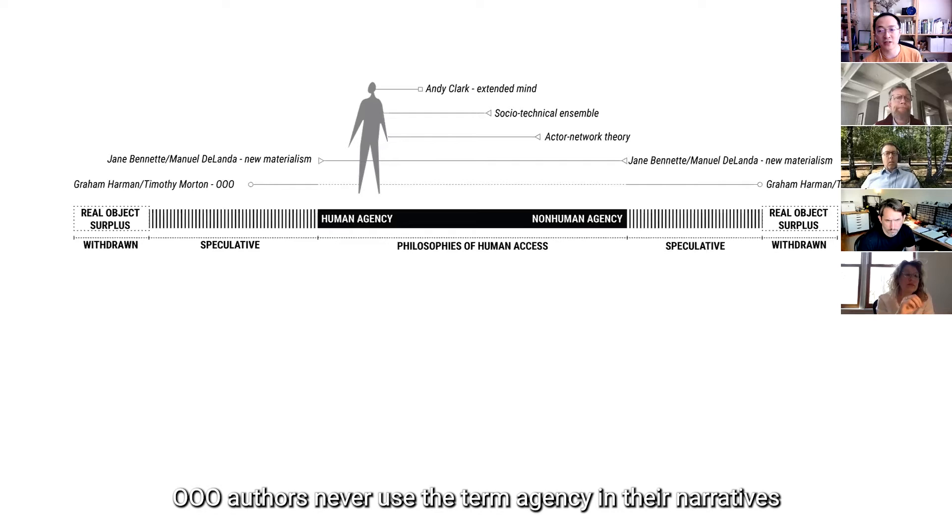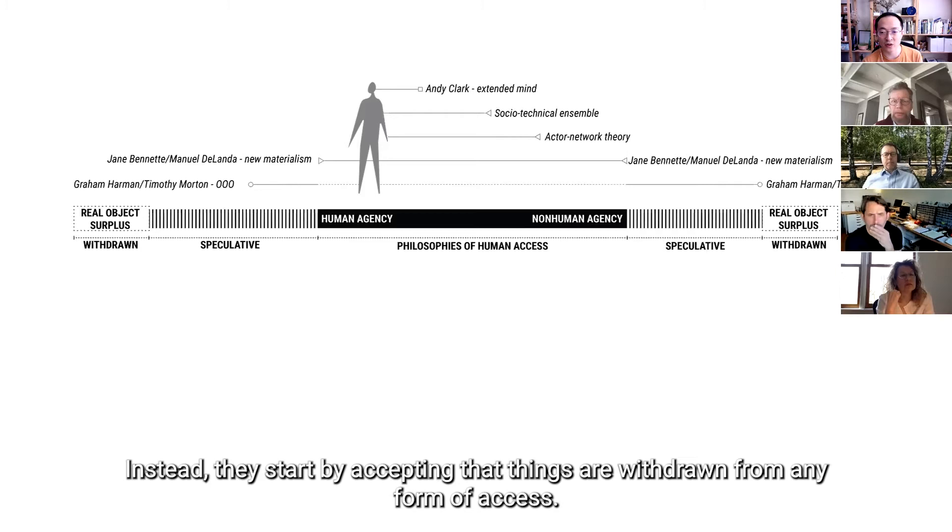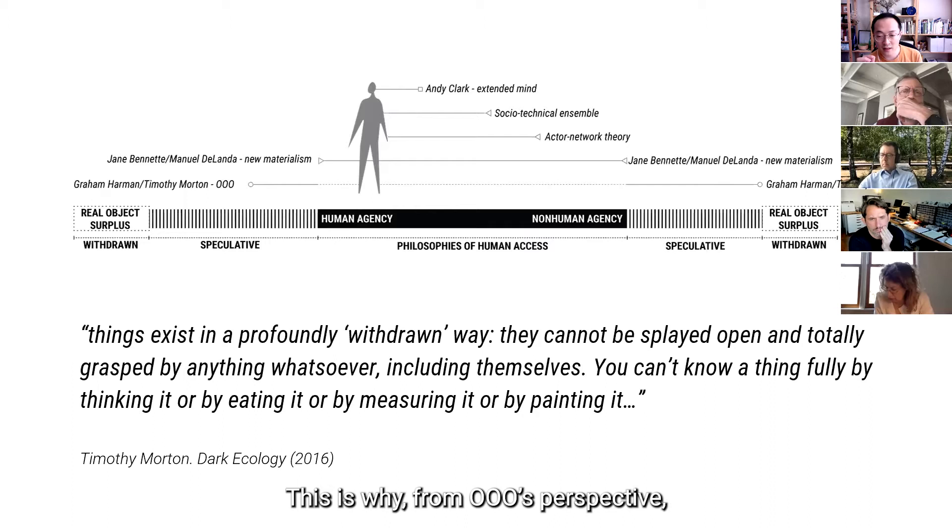So Triple O authors, I found, is that they never use the term agency in their narratives, because they know agency always points to an attribution of human perceived efficacy. And instead, they start by accepting that things are withdrawn from any form of access. I quote again, Timothy Morton says, things exist in a profoundly withdrawn way. They cannot be splayed open and totally grasped by anything whatsoever, including themselves. You cannot know a thing fully by thinking it, by eating it, or by measuring it, or by painting it. And this is why, from a Triple O's perspective, many of these so-called non-human frameworks are trapped in a philosophy of access, or a philosophy of human access.